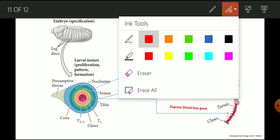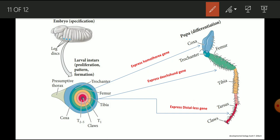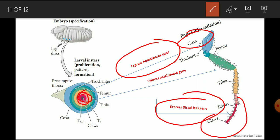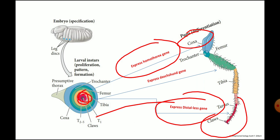Here in this picture we can see the expression of different genes and the structures they will form. The most external region expresses the Homothorax gene and forms the proximal structure (the coxa), and the most internal region shown in red will form the most distal structure, which is the claws and tarsus. So this was all about holometabolous insect metamorphosis and its genetic control. In our next lecture video, we will deal with the hormonal regulation of metamorphosis. Hope you will have understood and enjoyed the lecture. Thank you.